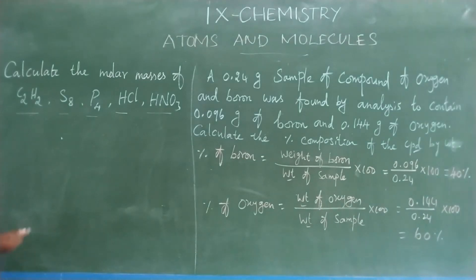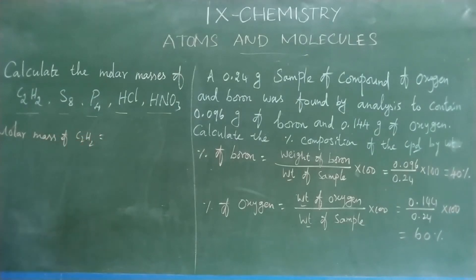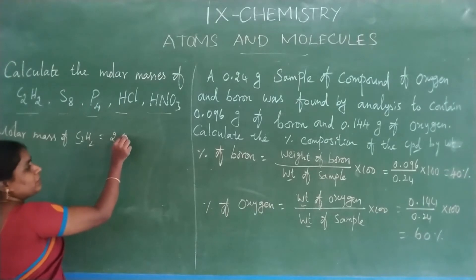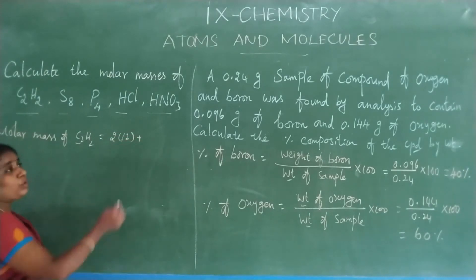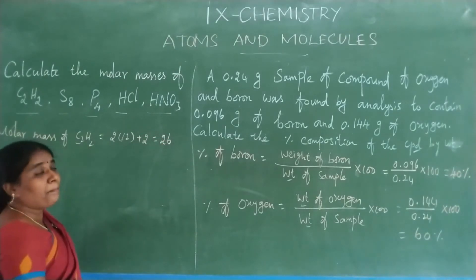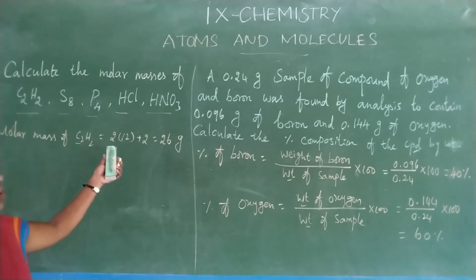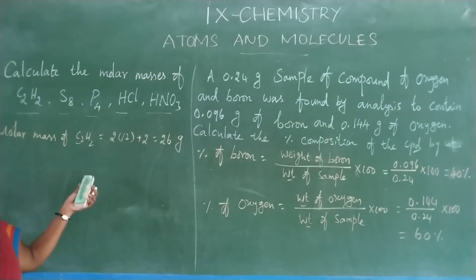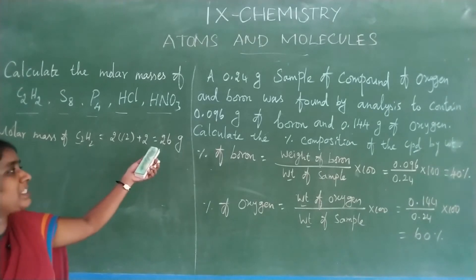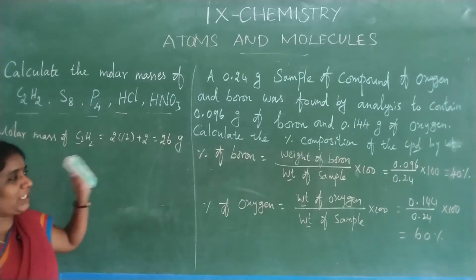Molar mass of C2H2 (acetylene): 2 carbon = 2 × 12 = 24; 2 hydrogen = 2 × 1 = 2. Total = 26 grams. Note the unit is grams — not U — because we are calculating molar mass, which measures the quantity of substance.